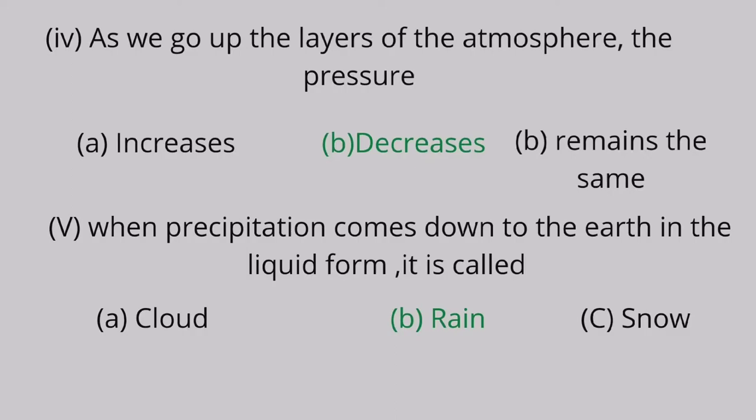Question 5: When precipitation comes down to the earth in the liquid form, it is called A. cloud, B. rain, C. snow. Rain is the correct answer.